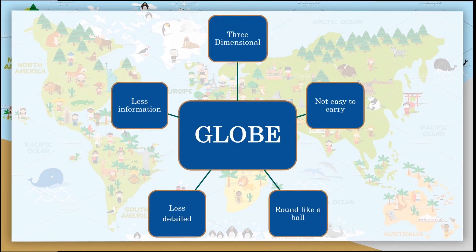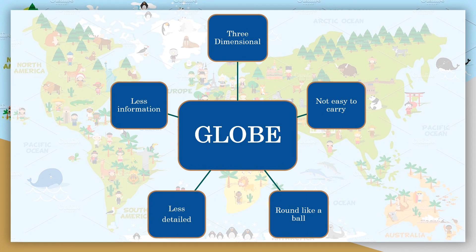Now let's talk about globe characteristics. So what are the properties of globe? Globes are three dimension. It has less information, less details, round like a ball and not easy to carry.